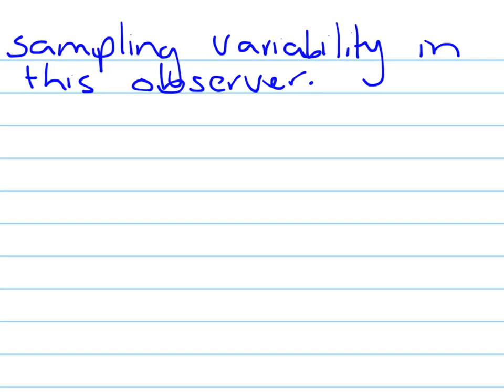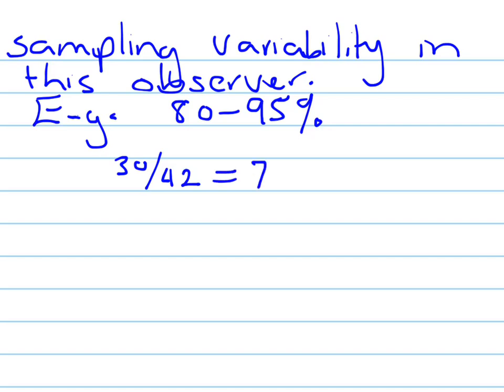For example, if this observer would normally have a rate of between 80 to 95% accuracy, we can look at this particular instance. 30 out of 42 is about 71% accurate.